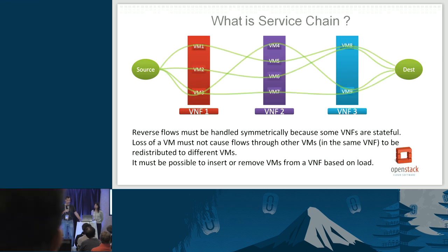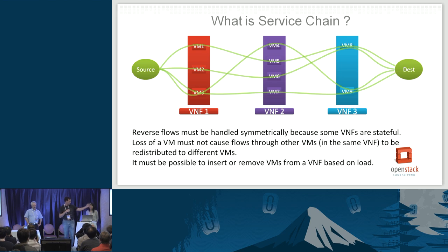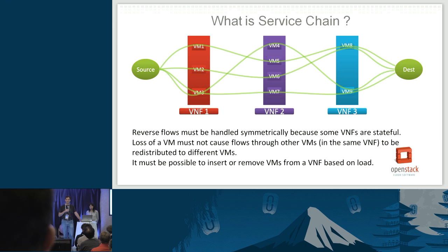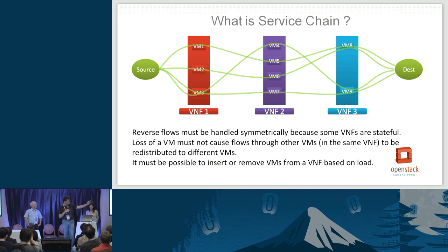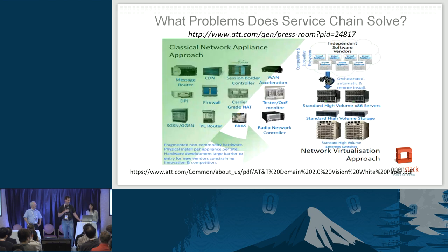Each function — VNF 1, 2, and 3 — really consists of multiple virtual machines. At each hop in the chain, those VMs may be doing different amounts of CPU work, so we may need more instances at one hop than another. We need to scale those independently and force traffic through consistent paths, because some service functions may be stateful and need to see both sides of a flow. One flow passes through the first VM of each function; a different flow follows a different pattern.